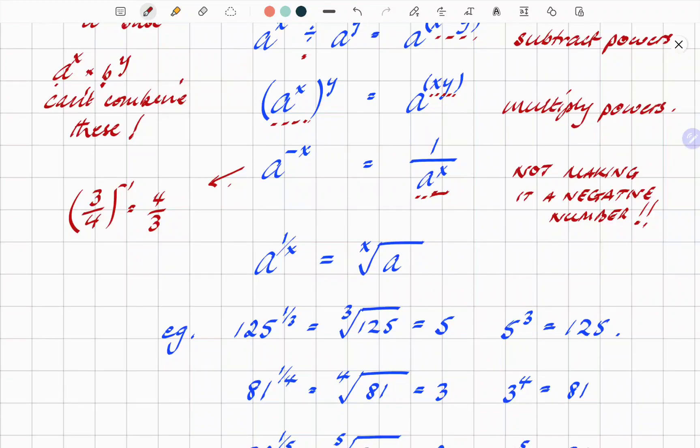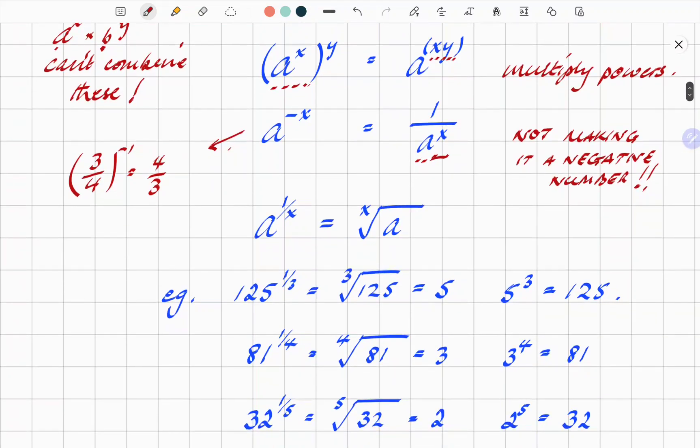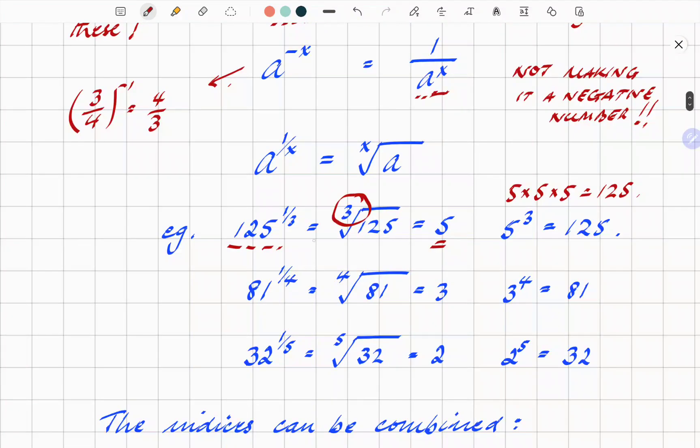And then perhaps the one that is the most difficult to get your head around, A to the power 1 over X. This actually means the root, the Xth root of A. And what does that mean? I'm going to use a couple of examples here. For example, 125 to the power 1 third, it actually means cube root. Cube root of 125 equals 5 because 5 to the power 3, so 5 times 5 times 5 is 125. I know maybe I'm going through some very basic things, but it's surprising how many students, even in years 10, 11, et cetera, get these things wrong.